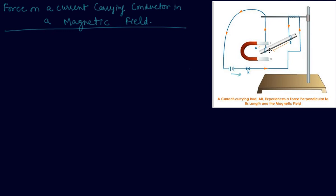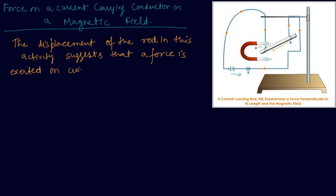Means there is a force that is exerted on this rod, that is why it is moving. I can say that the displacement of the rod in this activity suggests that a force is exerted on the current carrying aluminum rod.